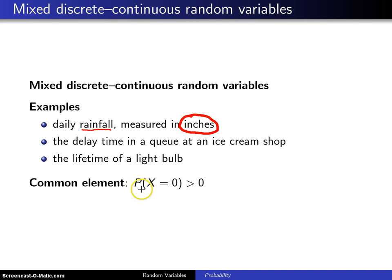But there is a problem, and the problem is that on some days it doesn't rain at all, which means the probability of getting a particular value, namely x equals zero if x is the daily rainfall, that probability is greater than zero, which is the discrete portion of the distribution.